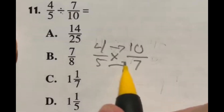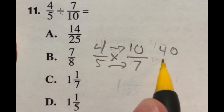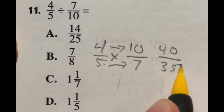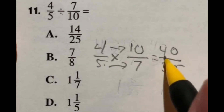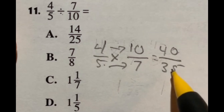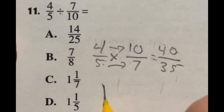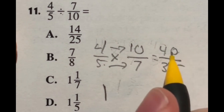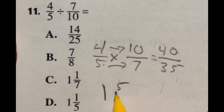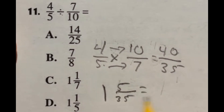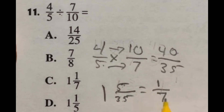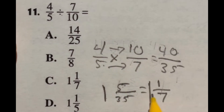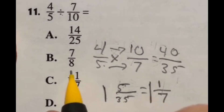So now we just need to multiply straight across: four times 10 gives me 40, and five times seven gives me 35. I notice that 40 over 35 is not one of the answers, so we're probably going to need to reduce this. Since 40 is bigger than 35, I pull 35 out to give me one whole, leaving five over 35. Then I divide both top and bottom by five: five divided by five is one and 35 divided by five is seven. So that gives us a final answer of one and one seventh, which is option C.